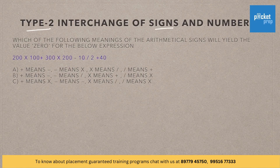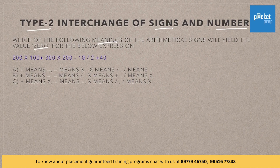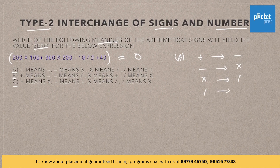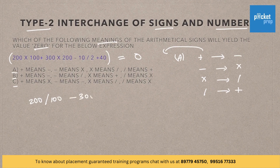Type 2: Interchange of signs and numbers. Here is the question: which of the following meanings of the arithmetic signs will yield the value 0 for the below expression? According to option A: plus means minus, minus means multiplication, multiplication means division, division means plus. Let us substitute this in the given expression: 200 divided by 100 minus 300 divided by 200 into 10 plus 2 minus 40.